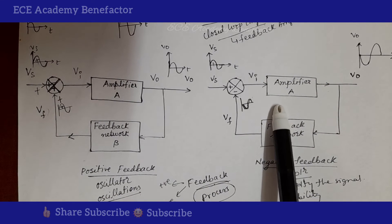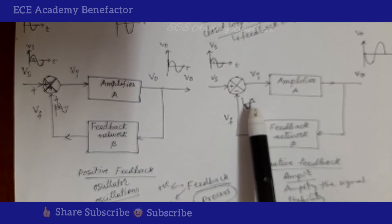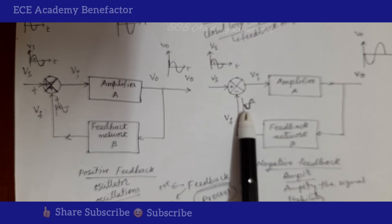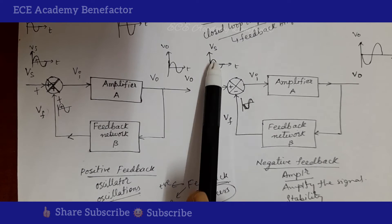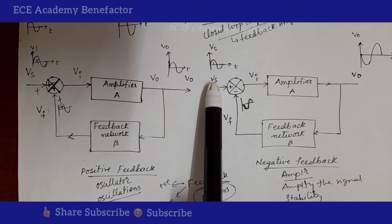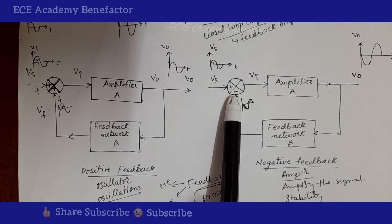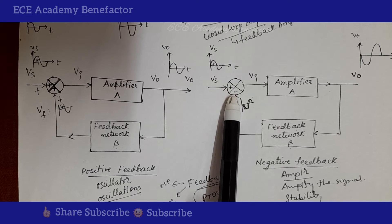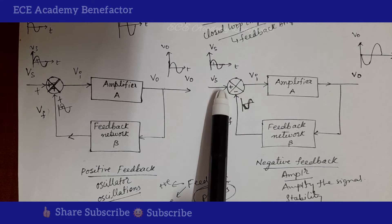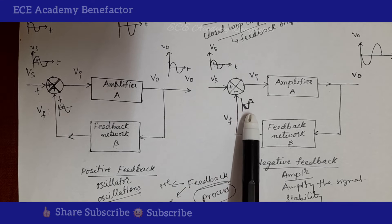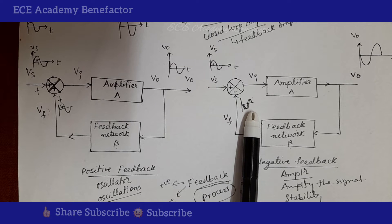In negative feedback, the feedback signal is out of phase with respect to the input signal — for the positive half cycle of input, the feedback signal is in the negative cycle, and vice versa. When the feedback signal and source signal are out of phase, shown symbolically as plus and minus, we call it negative feedback. This type of negative feedback is used in amplifiers.